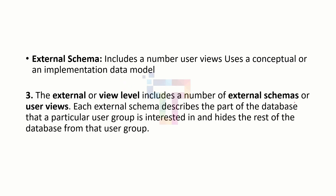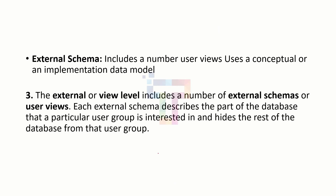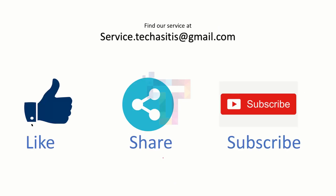External schema includes a number of external schemas or user views. Each external schema describes the part of the database that a particular user group is interested in and hides the rest of the database from the user. For example, one user wants to see only the phone numbers of students — they don't want student names, date of birth, and IDs. The next user wants only the student names. So according to user choice, the external schema will show what data they want to see.